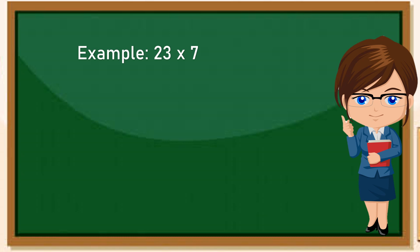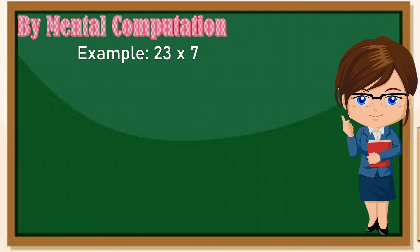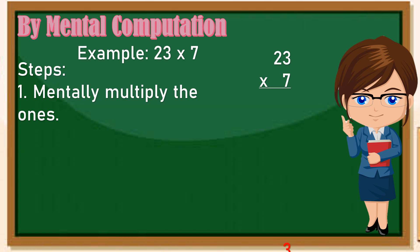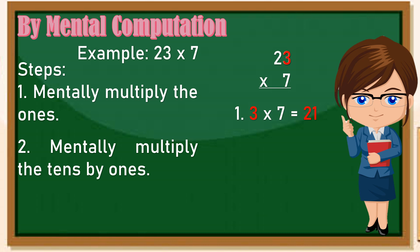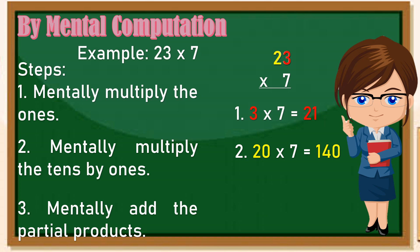Example: 23 times 7. Paano natin sya ay kukompute? Kukompute natin sya sa pamamagitan ng by mental computation. Ito ang steps: one, mentally multiply the ones. Tingnan natin alin dyan ang nasa ones place sa 23, that's it, 3. Kaya 3 times 7 is 21. Next is mentally multiply the tens by ones. Alin ang nasa tens place? Ang 2. Since nasa tens place sya, ang value nya ay 20. Kaya 20 times 7 is 140. And mentally add the partial products. So ang unang product natin ay 21 plus 140 na second partial product natin.